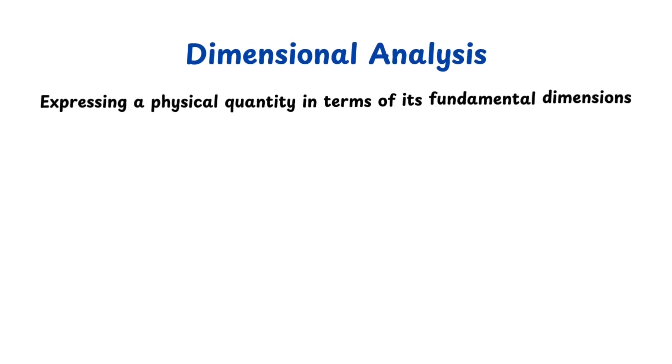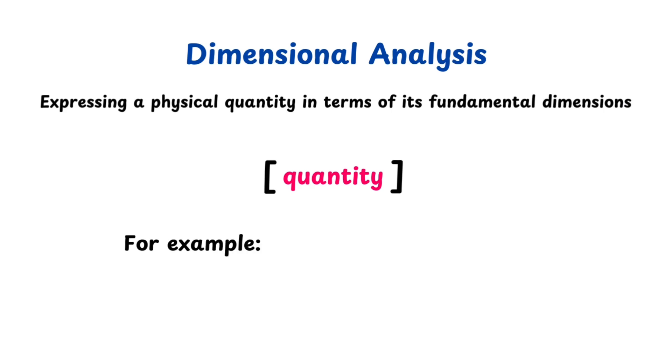Dimensional analysis is the process of expressing any physical quantity in terms of these base dimensions. We represent the dimension of a quantity by writing it inside square brackets. For example, if we take distance written as x, then its dimension is [x] and this equals L because distance is purely a measure of length.